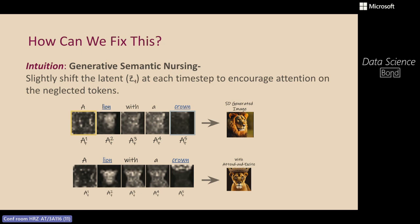How can we fix this? The idea is Generative Semantic Nursing. At each denoising time step of the DDPM process, we encourage the model to pay more attention to the neglected subject. We slightly shift the latent ZT — the latent inserted into the diffusion model at each step — such that the model is encouraged to attend to the neglected subject. The result: attention values for 'crown' become high in some parts of the image, and the corresponding image generates a lion with the crown.